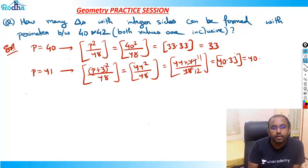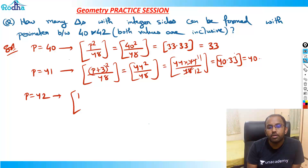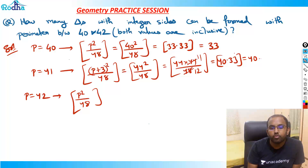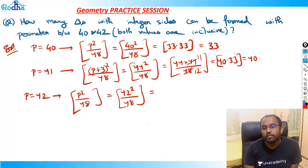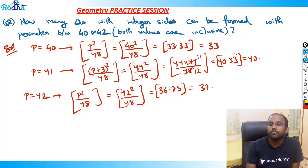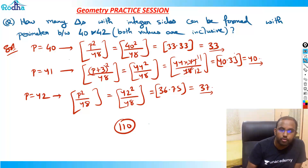Then for P = 42, it is again an even number, so P² / 48 = 42² / 48 = 1764 / 48 = 36.75, which rounds to 37. So the total number of triangles is 33 + 40 + 37 = 110. The answer is 110.